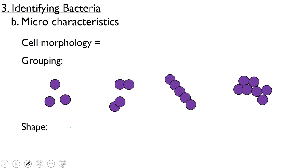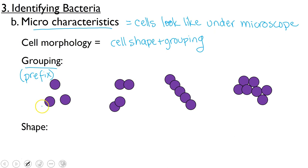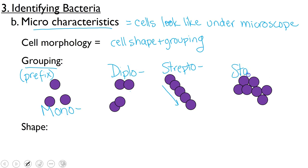Another way we can identify them is under the microscope — these are your micro characteristics, what the cells look like under a microscope. We're going to call this our cell morphology, which is the cell shape and grouping. We'll start with the grouping because it often forms the prefix for our bacteria names. For single cells, we use the prefix 'mono.' For bacteria in pairs, we use the prefix 'diplo.' For bacteria in chains, we use the prefix 'strepto.' And for bacteria in clusters, we use the prefix 'staphylo.'